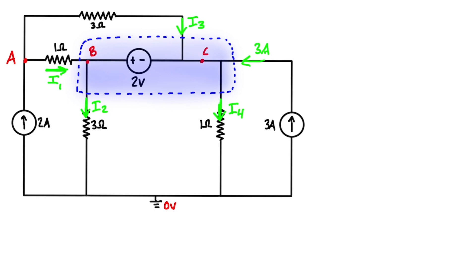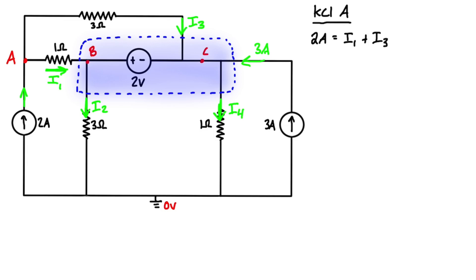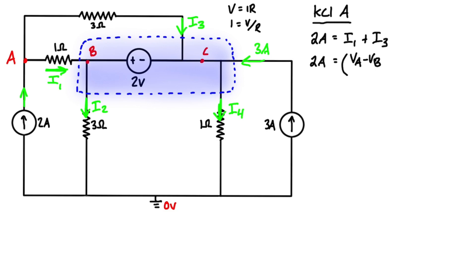Let's write KCL at node A. We have 2 amps coming in, and I1 plus I3 going out. We can write these in terms of voltages using Ohm's law: current equals V over R. For I1, the voltage drop across the resistor is Va minus Vb, divided by 1 ohm. Current flows from higher to lower voltage, so the drop is Va minus Vb.